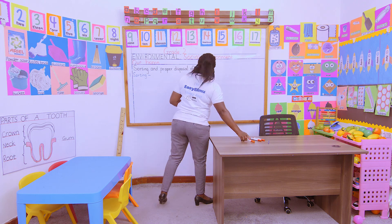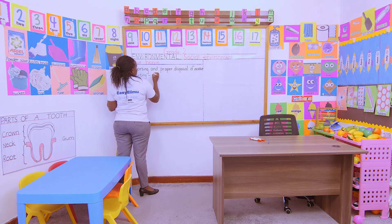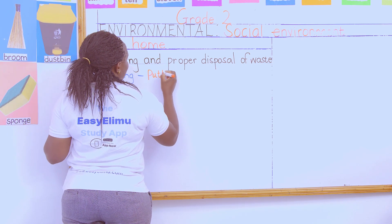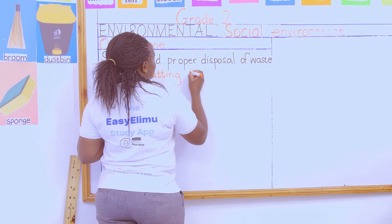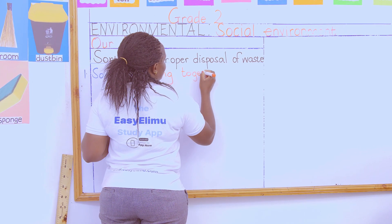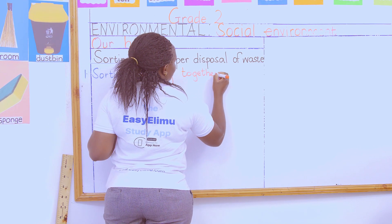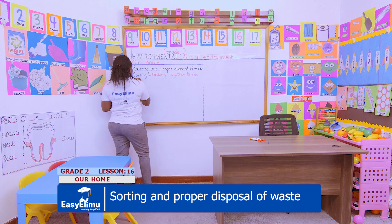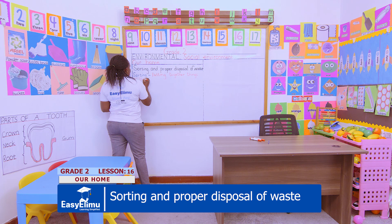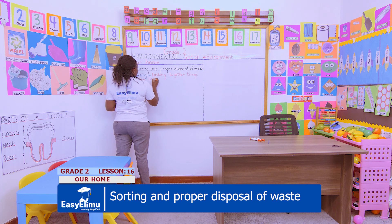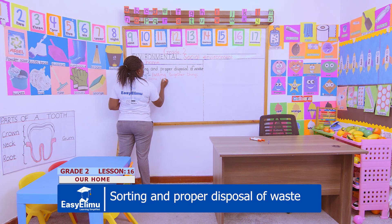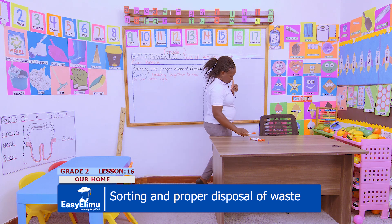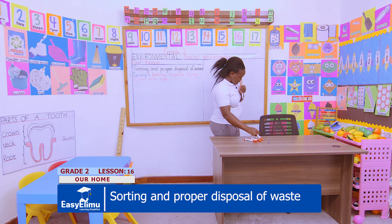So when someone asks you: what is sorting? Sorting means putting together things of the same type. And in this case, what are we sorting? In this case, we are sorting waste.